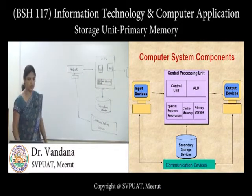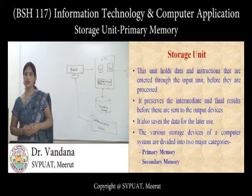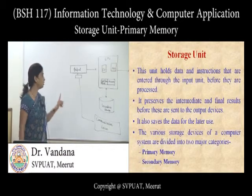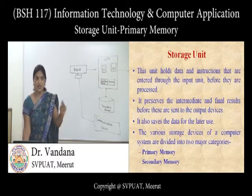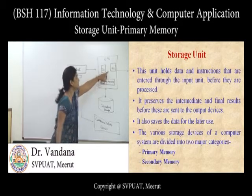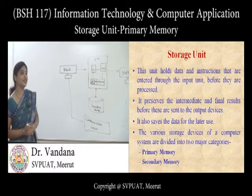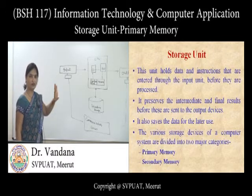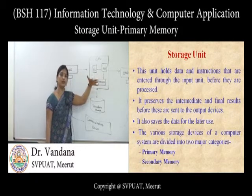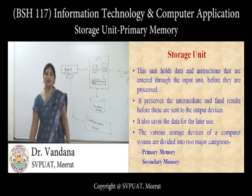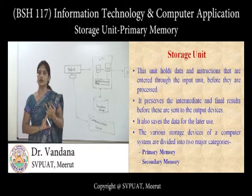Starting with the storage unit — a unit that holds data, instructions, and programs entered through the keyboard or any input device that are to be processed. It also preserves intermediate results. This unit stores data before it is handed over to the output device or secondary storage. Memory is used for three purposes: to store accepted input, to store programs, and to store intermediate and final results in primary memory.